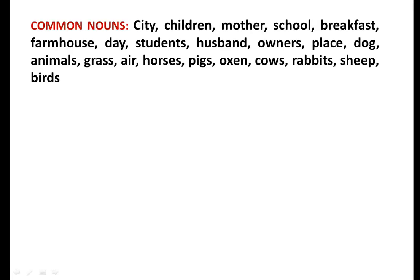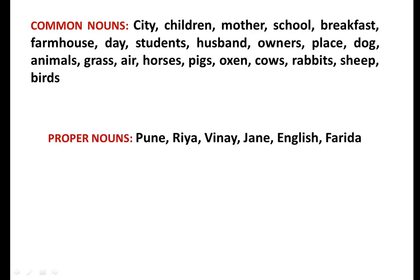The first category is common nouns. These are not particular names of things or places — they are general. On the contrary, proper nouns are actual proper names of a particular city, person, place, animal, thing, etc. So you see here the difference between common nouns and proper nouns.